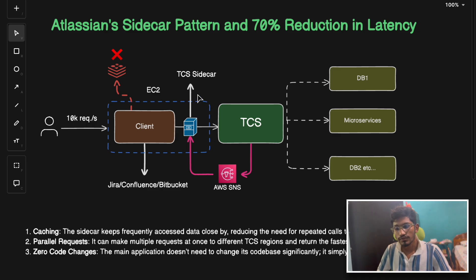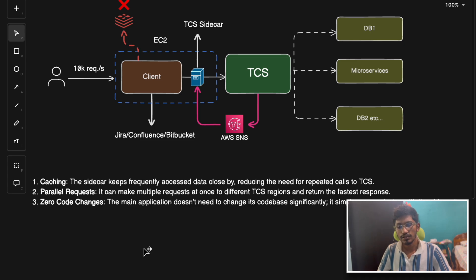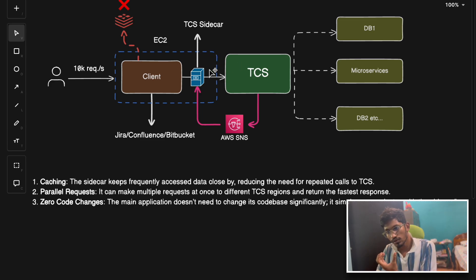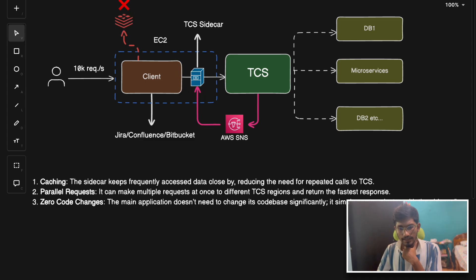One of the most frequently used functions of the sidecar pattern is that the sidecar keeps frequently accessed data close to it, reducing the need to call the TCS server repeatedly for the same data. Even if there is a global distributed caching server, that became a bottleneck — that's why the sidecar could act as a local cache.